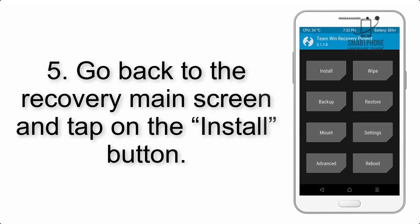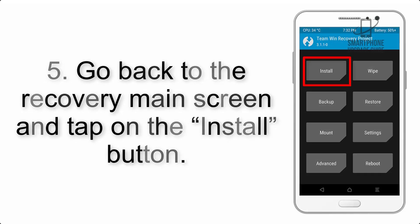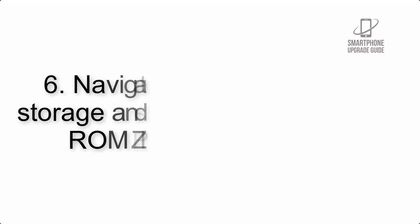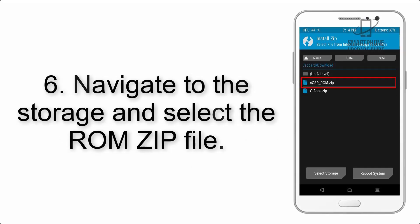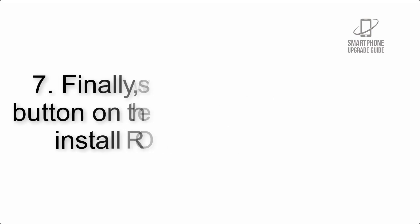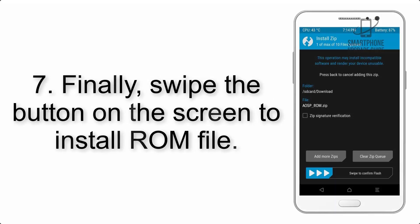Step 4: Swipe the button to wipe the device. Step 5: Go back to the recovery main screen and tap on the Install button. Step 6: Navigate to the storage and select the ROM zip file.